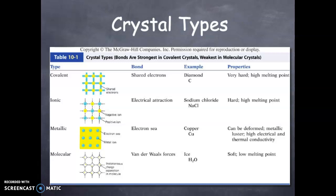Here are the four basic types of crystalline solid: covalent, ionic, metallic, and molecular. This is a depiction of the way we visualize the bonding between the parts: shared electrons for covalent, electrical attraction for ionic, electron sea for metallic, and van der Waals forces for the molecular.